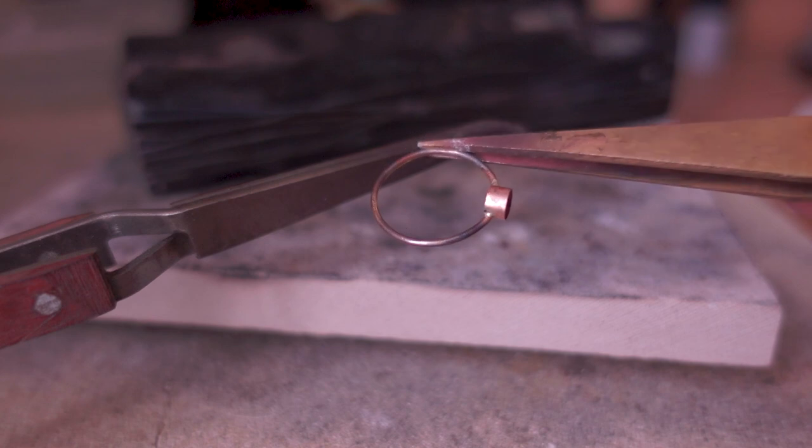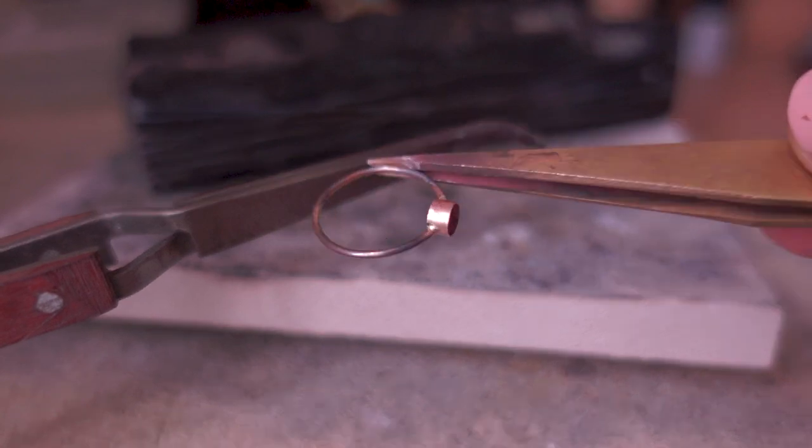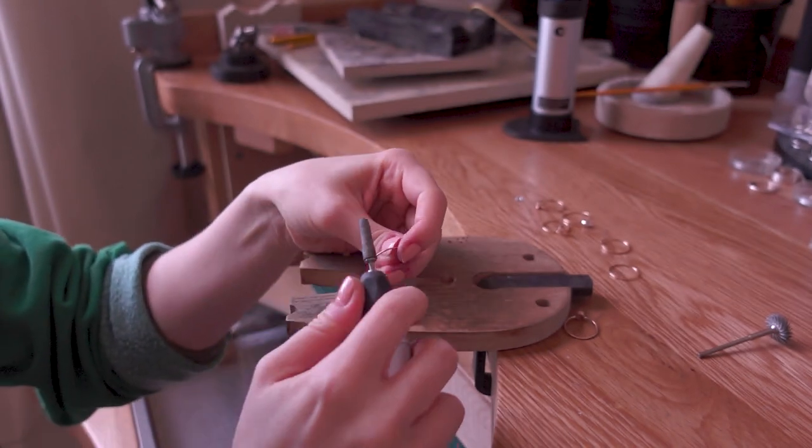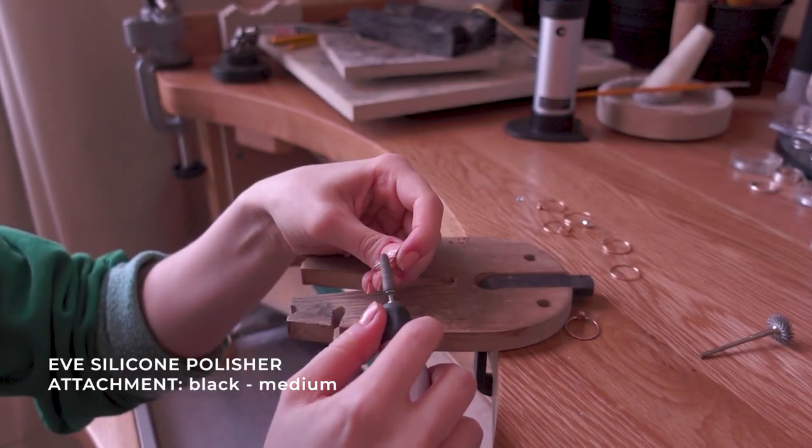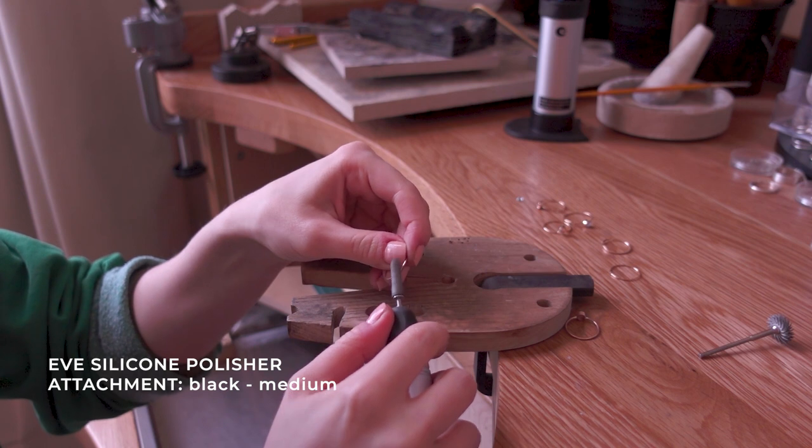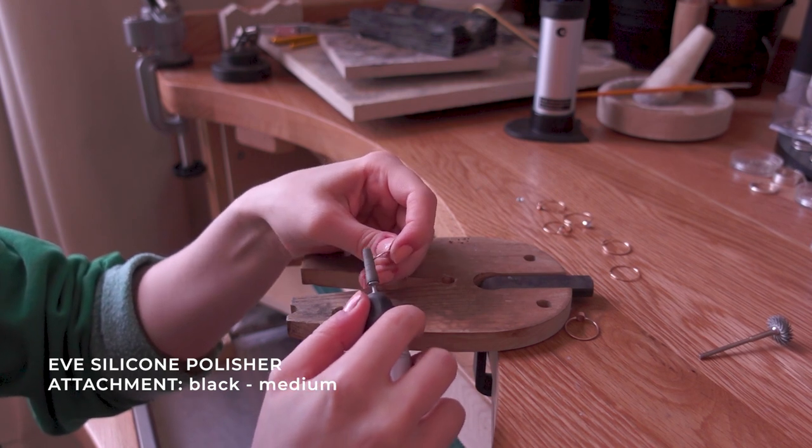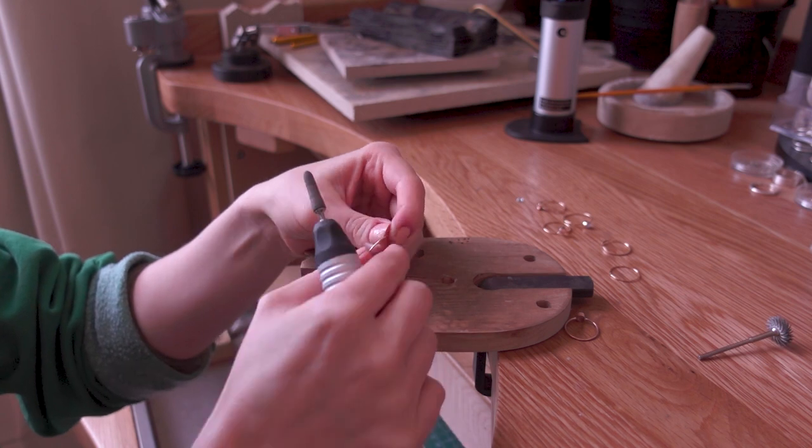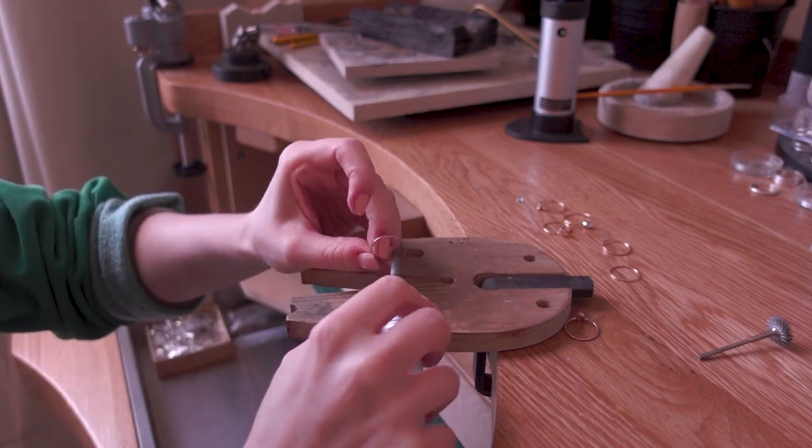So now I'm going to clean the dainty band. The first project that we did. And for that I'm using this EVE silicone polisher. This one's black medium. And I chose this one because I didn't need anything coarse. But I also wanted to remove some of the marks.